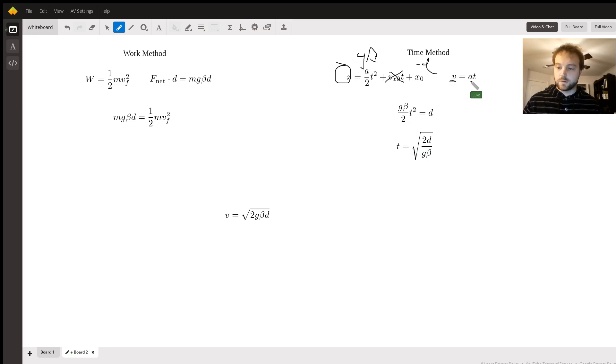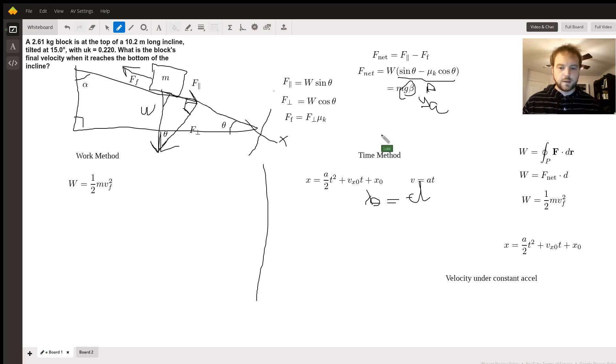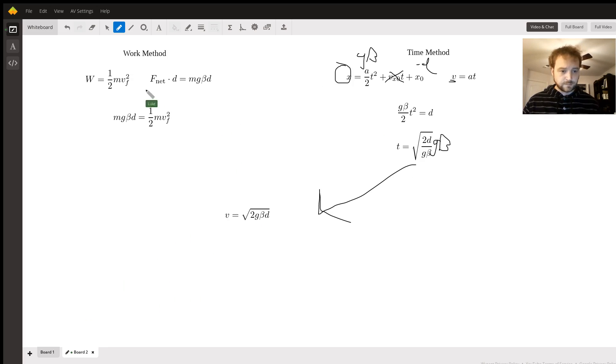Now we want the velocity, which is the acceleration times the time. So we need to multiply this by g*beta in order to get the velocity. And we can factor that into the square root, and we get v equals the square root of 2g*beta*d. Once again, beta is just this expression: sin(θ) - μ_k*cos(θ).